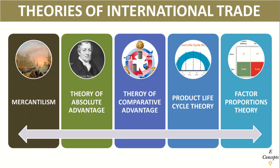So we have discussed international trade at an initial level. In the next lecture, we will discuss the theories of international trade — the theory of mercantilism, the theory of absolute advantage, the theory of comparative advantage, the product life cycle theory, and the factor proportions theory. I will make sure that the link to the next video is available in the description. Thank you.